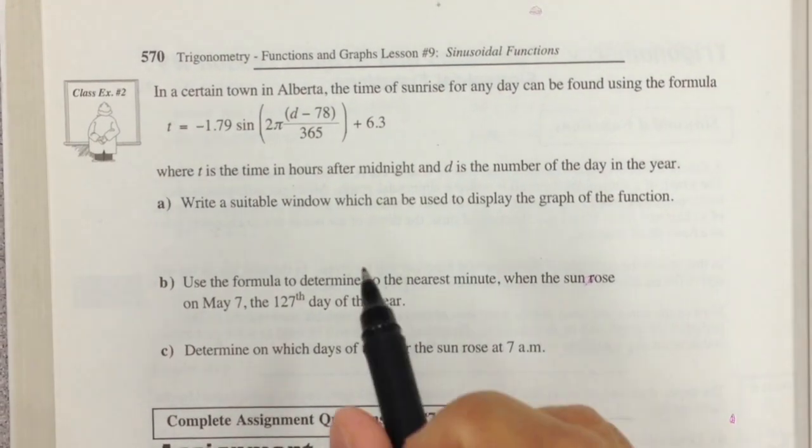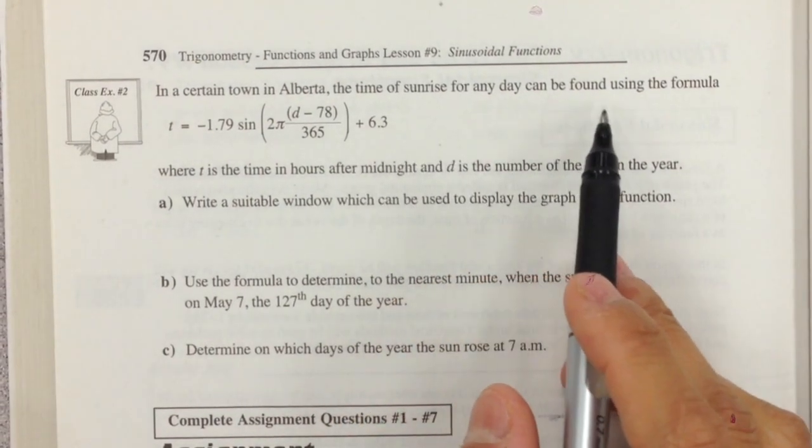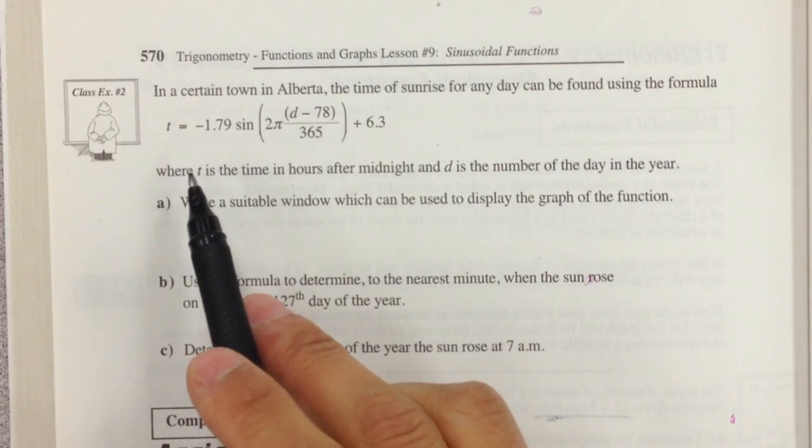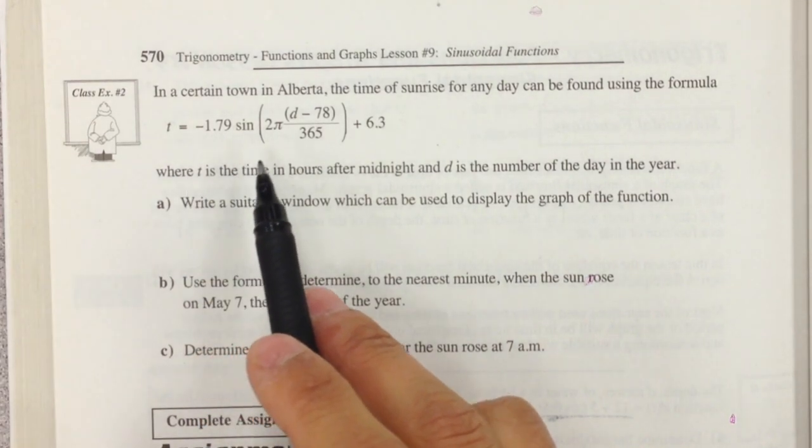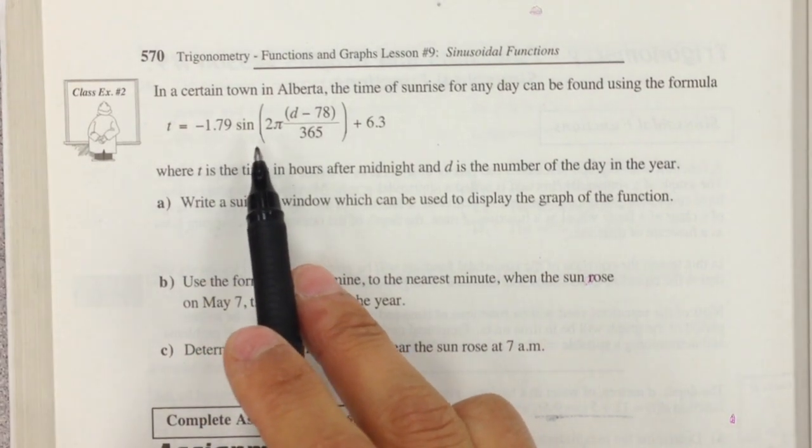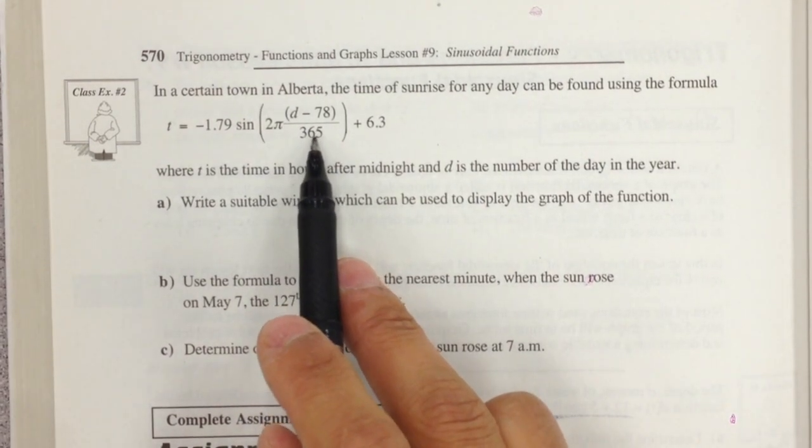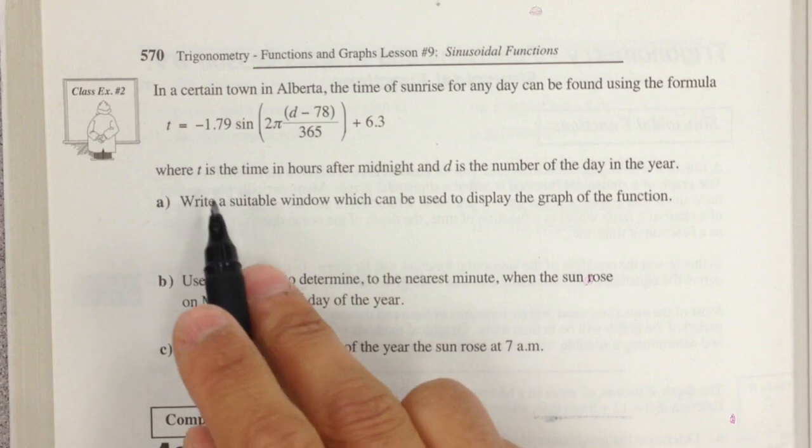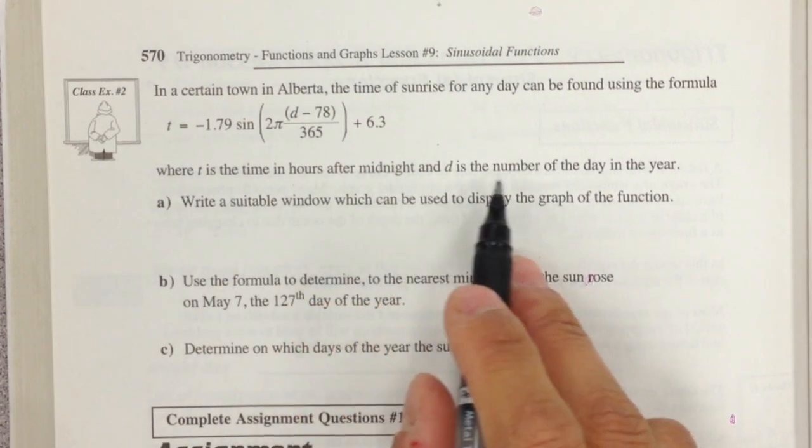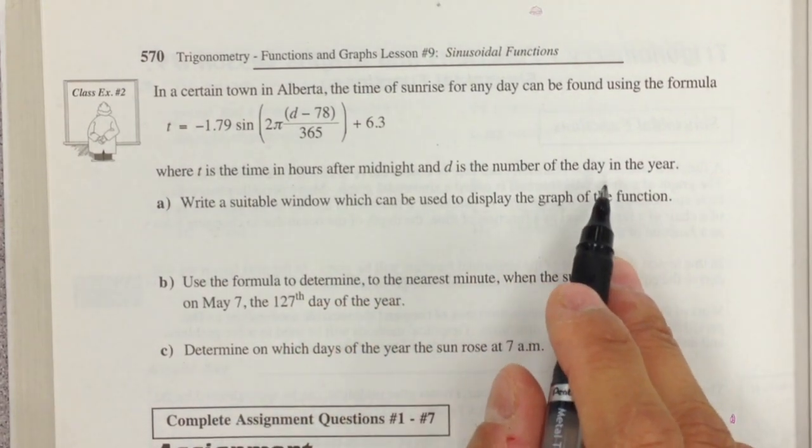In a certain small town in Alberta, the time of sunrise for any day can be found using this formula: t = -1.79sin(2π(d-70)/365) + 6.3, where t is the time in hours after midnight and d is the number of the day in the year.